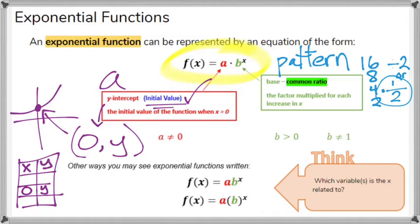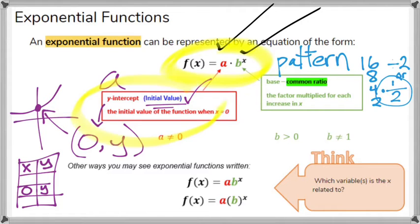That is the basic idea. You are trying to figure out the value of a — the initial value, or the y-intercept — and then b, your common ratio, or your pattern. So let's do a few examples.